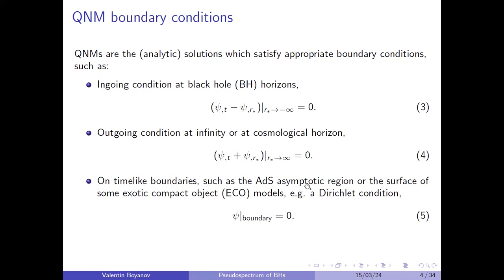On the other hand, if we have time-like boundaries to our problems, such as the anti-de Sitter asymptotic region or the surface of some stellar object or exotic compact object, we have to impose other conditions. In particular, for the AdS boundary and the exotic compact objects discussed here, the boundary condition imposed at the surface is just a Dirichlet or Neumann condition — the field or its derivative goes to zero.